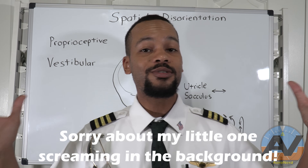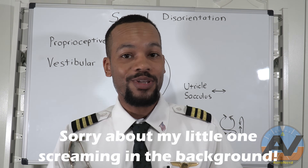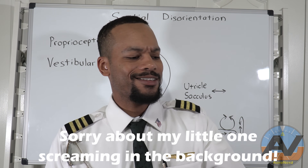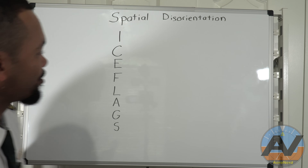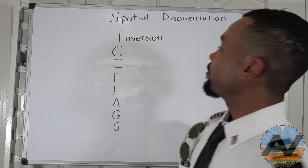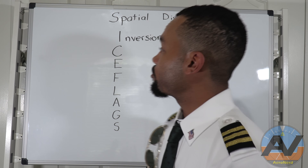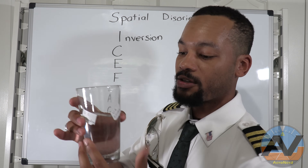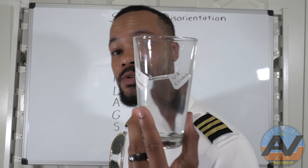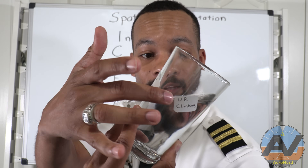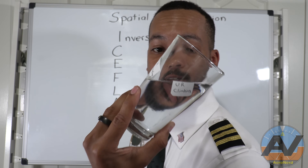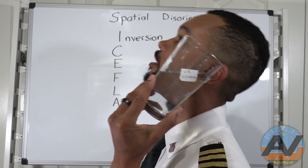Let's go into ICE FLAGS and put together why I did this experiment with the glass. The very first one is inversion. I'm going to use my glass demonstration again. When you are climbing — you can see right there — as I move the water back like this, it lines up with that level right there and says, hey, I'm in a climb.